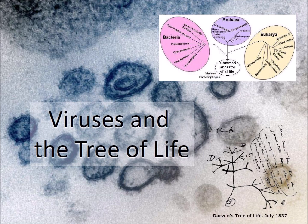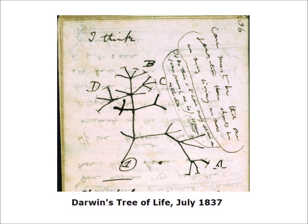Charles Darwin proposed a theory of evolution in his book The Origin of Species, which was published in 1859. One of his notebooks contained a diagram of a Tree of Life where each branch represented species that diverged from one or more common ancestors. The idea of evolution was controversial in Darwin's time, but it has been firmly established through analysis of DNA molecules that specify the genetic characteristics of all living organisms.